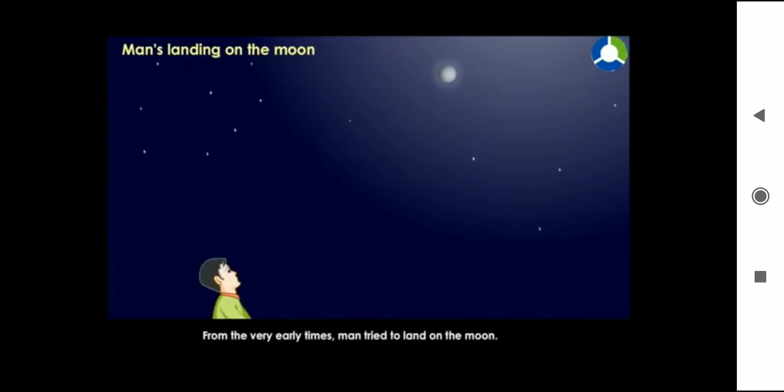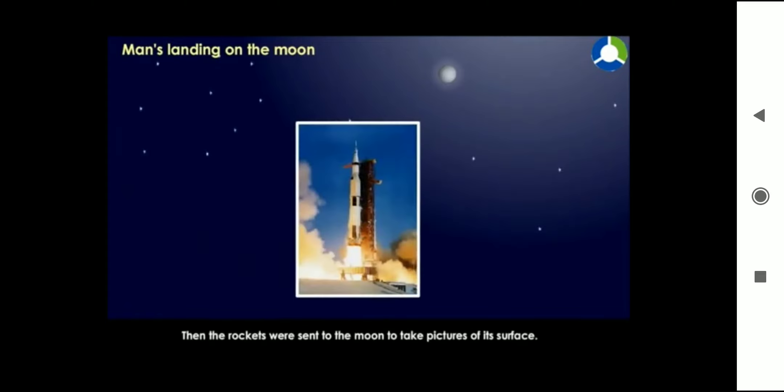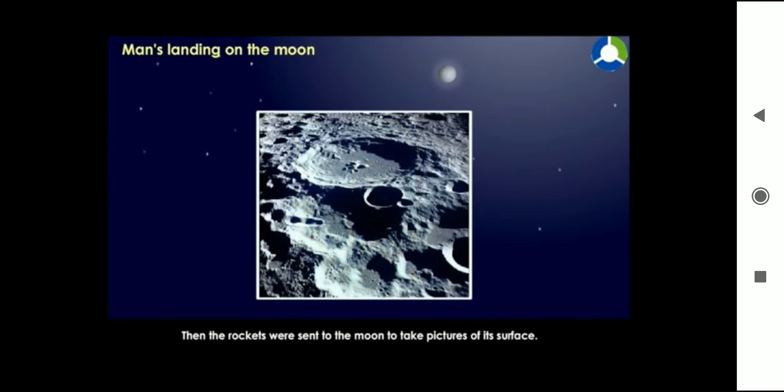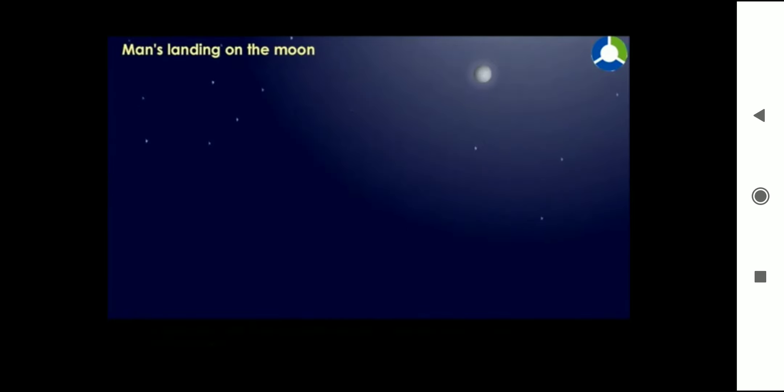From the very early times, man tried to land on the moon. At first, big telescopes were used to look at the moon. Then the rockets were sent to the moon to take pictures of its surface.